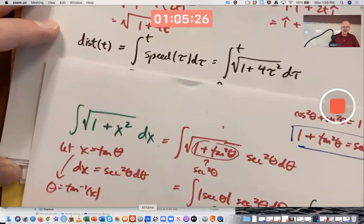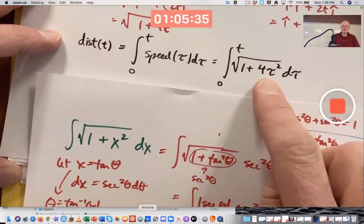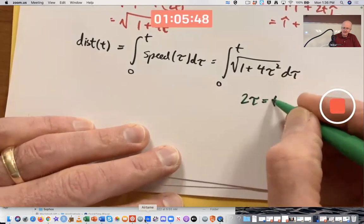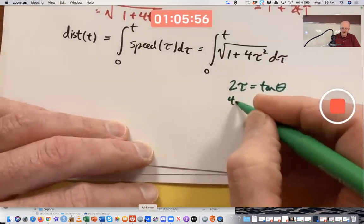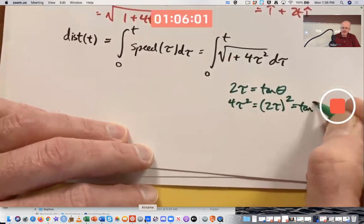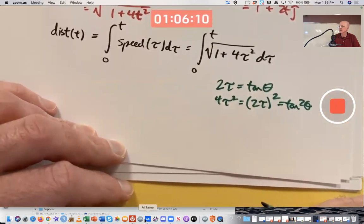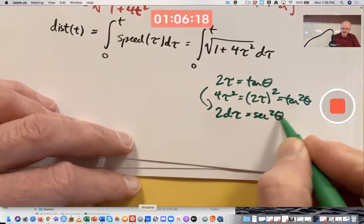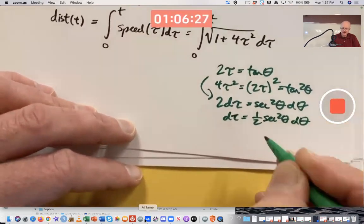Back in this problem, I let x equal tan theta. The one here is a little trickier because of the four. The four is two squared. Maybe I should let two tau equal tan theta. And that is the best thing to do. Because then four tau squared is two tau quantity squared is tan squared theta, and you'll have a one plus tan squared theta there, that'll be secant squared theta and you'll take its square root. As far as d tau, you're going to have two d tau equals secant squared theta d theta. So that means d tau is one half secant squared theta d theta. I won't finish it, but you'd go from there.